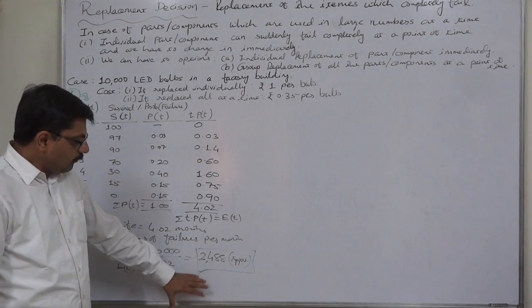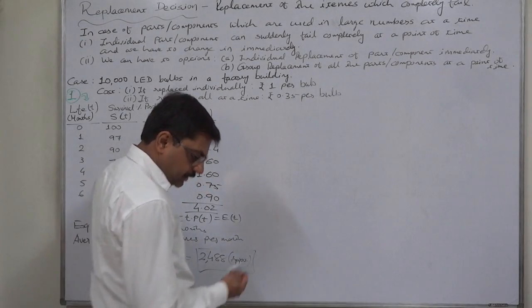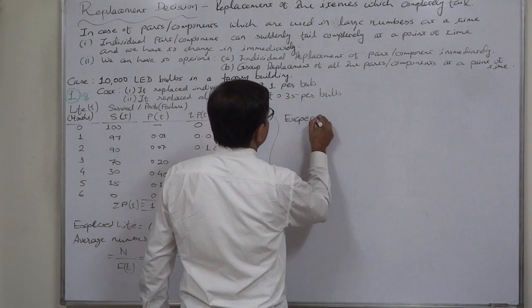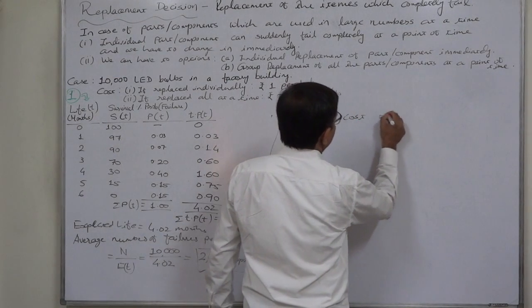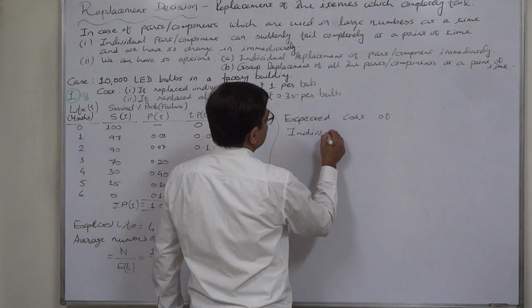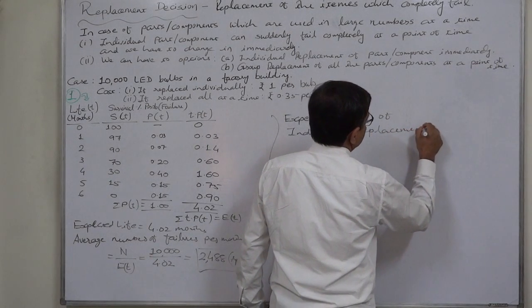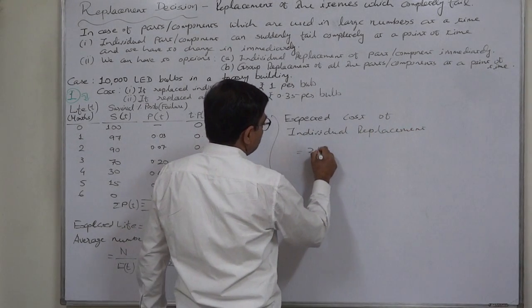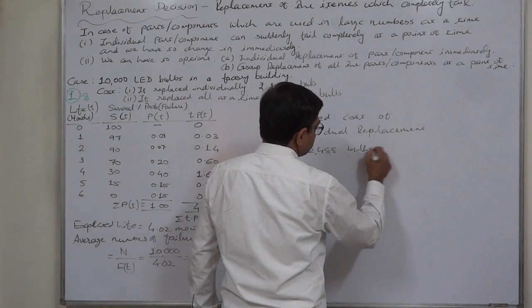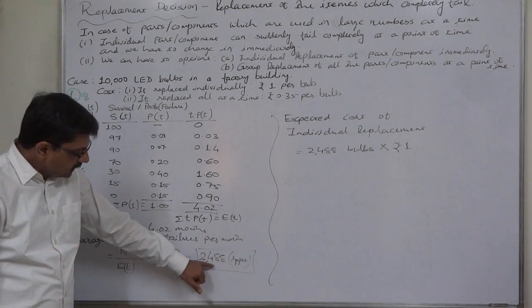We can expect the cost of individual replacement will be 2,488 bulbs or parts or components into rupee 1, because we are not going to replace all these at a particular point of time in a month.